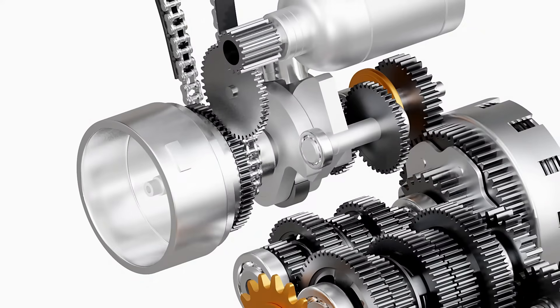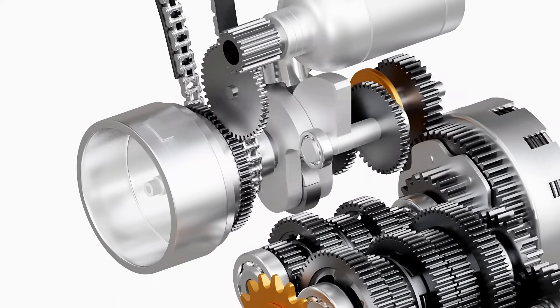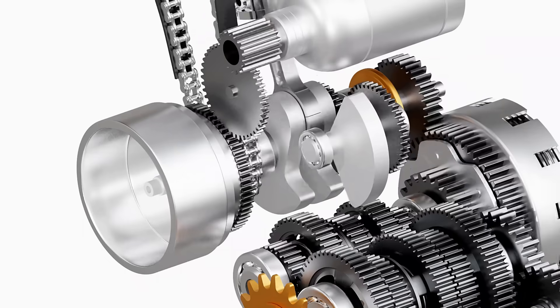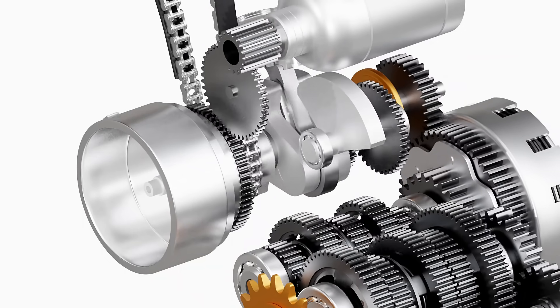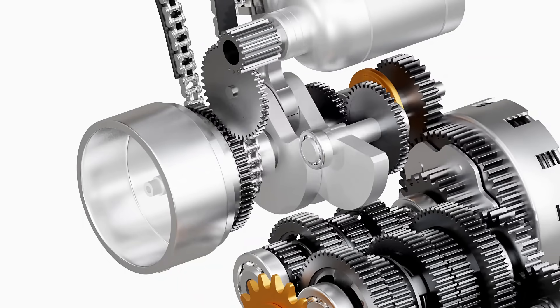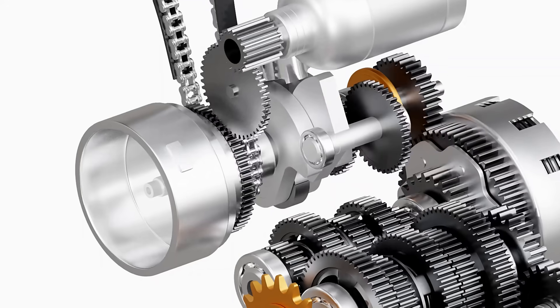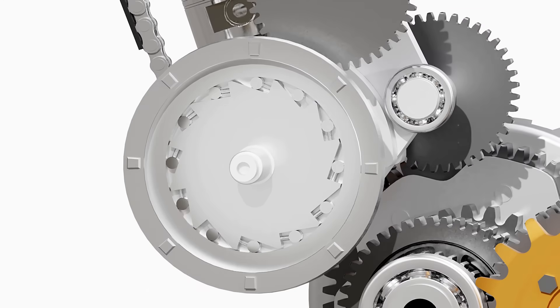In a self-starter system, a battery-powered motor provides initial spin to the engine. Once the engine is started, the starter motor has to be disengaged from the crankshaft to prevent damage due to excessive speed. This is achieved by using a one-way clutch.